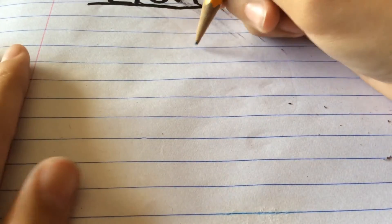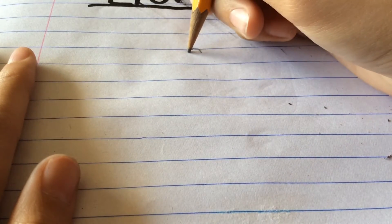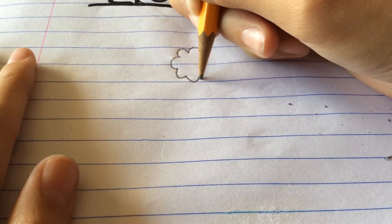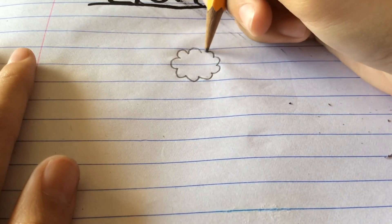First, you have to draw a big cloud. Not too big though, because if you're drawing an adult lion, you have to draw it big, but I'm drawing a little one.